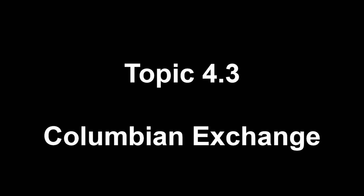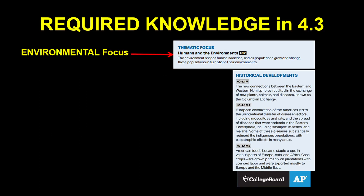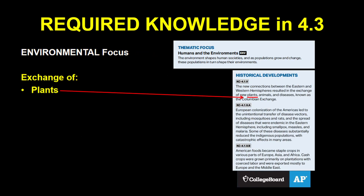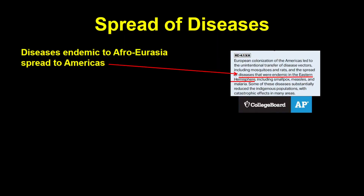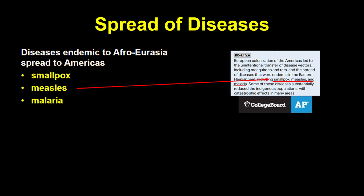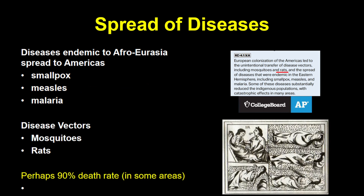Now let's talk about the Columbian Exchange, which for the College Board is an environmental development. We're referring to the exchange of plants, animals, and diseases between the Eastern and Western Hemispheres. Let's start with diseases. When the Europeans and later Africans arrived in the Americas, they brought diseases that had been in Afro-Eurasia for centuries, like smallpox, measles, and malaria. These diseases were new to the Americas, and local populations had virtually no immunity to them, often leading to catastrophic levels of population decline — in some places as much as 90% of populations may have been wiped out. These widespread deadly epidemics in the Americas are collectively called the Great Dying.